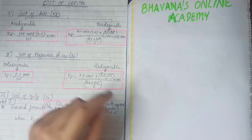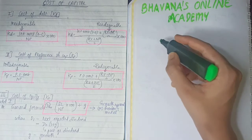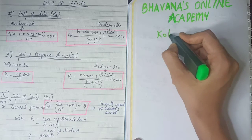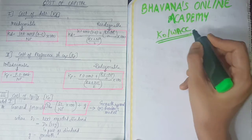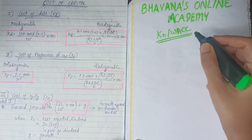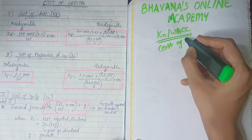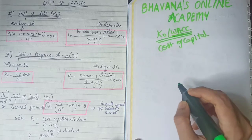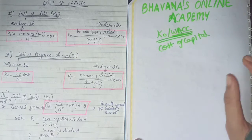First, in this chapter, I'll tell you the scope of the chapter. What you have to find is something known as KO or WACC — the cost of capital, or weighted average cost of capital.